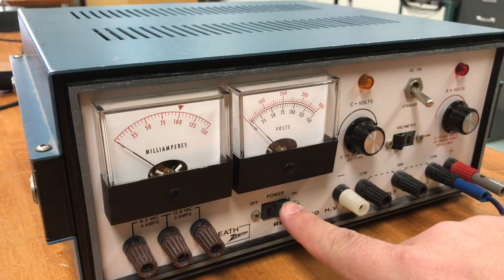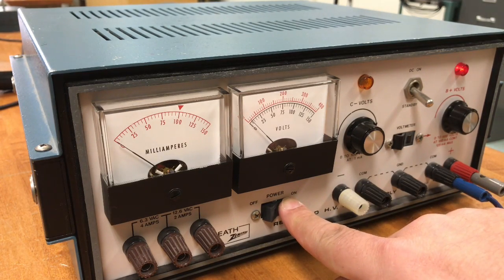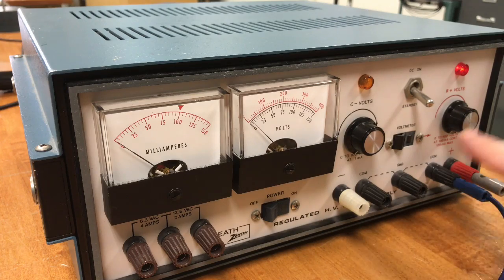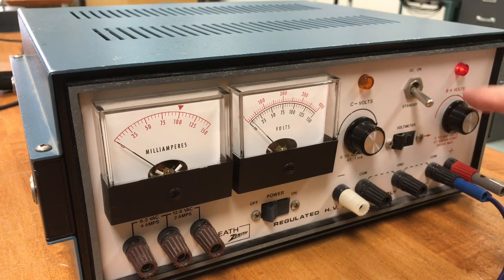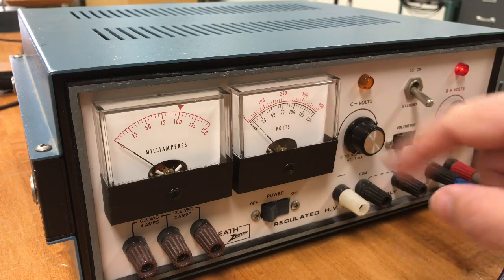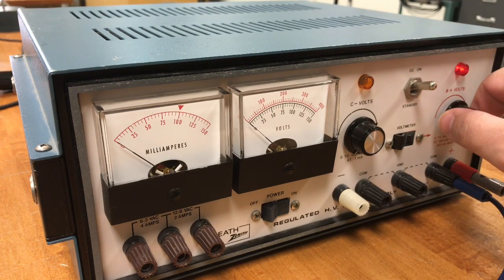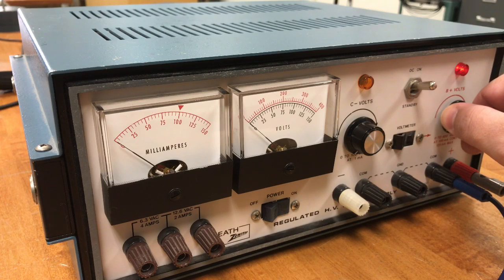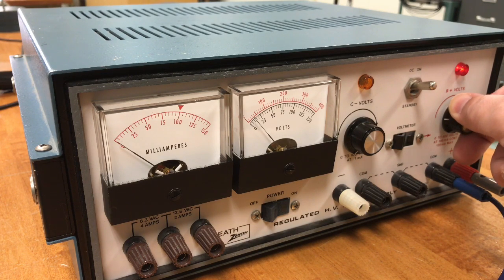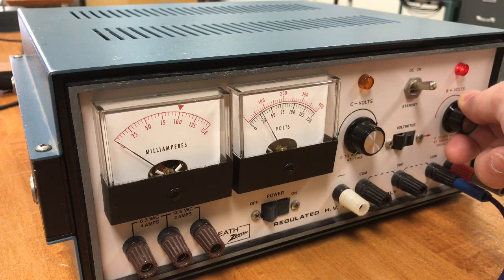To operate this power supply, first flip on the main power switch. This is selected on this side, meaning we'll be reading the scale here in red. We will turn the DC power on. We can now adjust our voltage from zero to a maximum of approximately 400 volts.